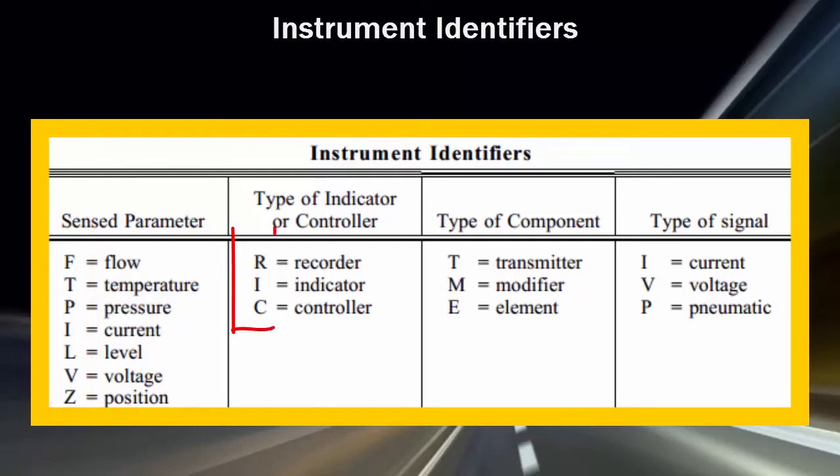The second column lists the letters used to indicate the type of indicator or controller. The third column lists the letters used to indicate the type of component. And the fourth column lists the letters used to indicate the type of signal that is being modified by a modifier.